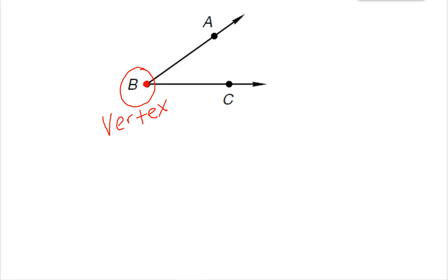Now we can name angles in a variety of ways. One way is to just name it by whatever the vertex is. So I could call this angle B, and we do that by drawing a little angle symbol and putting the letter B.